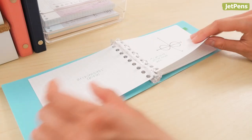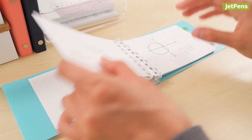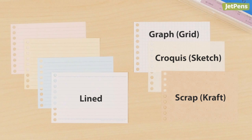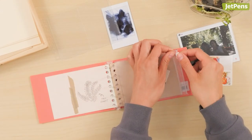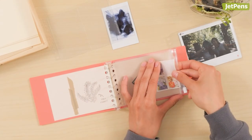These binders can be used with a variety of refills, including lined, grid, cream-colored sketch paper, and craft paper. Plastic sleeves and zipper pouches are also available.